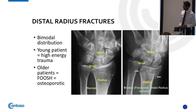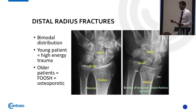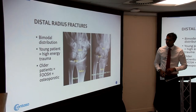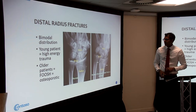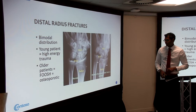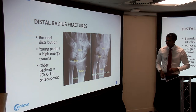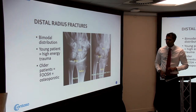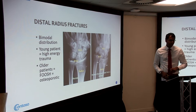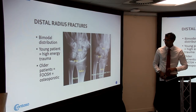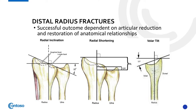Wrist fractures have a bimodal distribution: high energy injury in young patients, and in older patients typically a fall related to reduced bone density. Normal anatomy shows the radius, ulna, radiocarpal joint, and carpal bones. A fracture appears just distal to the radius on x-ray. Watch out for an ulna styloid fracture — this indicates the fracture is more unstable than it appears and is a fairly significant injury.